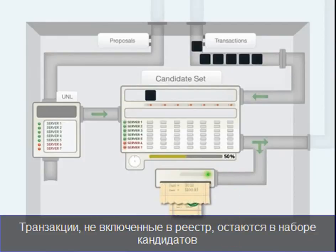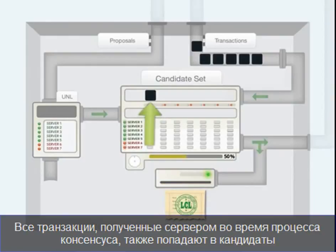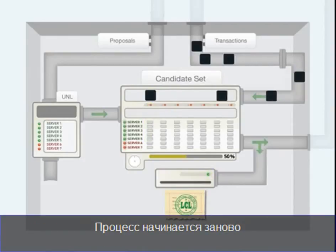Transactions that were not included in the ledger remain in the candidate set. All transactions received during the consensus process are added to the candidate set. And now the process starts again.